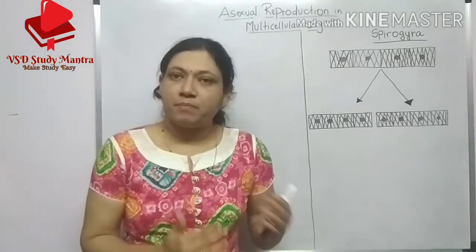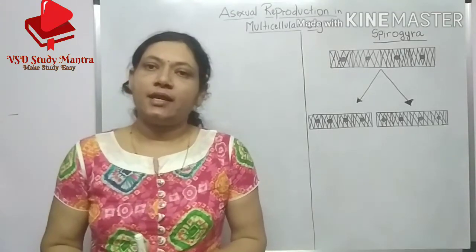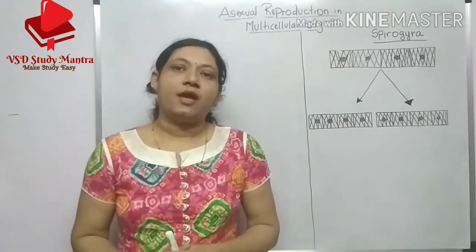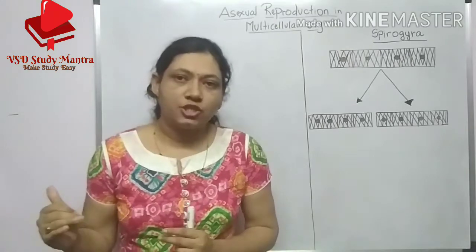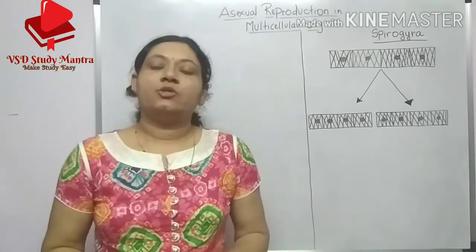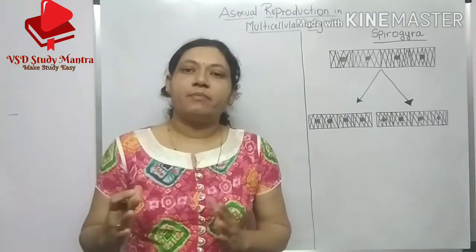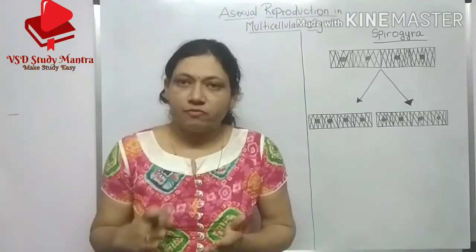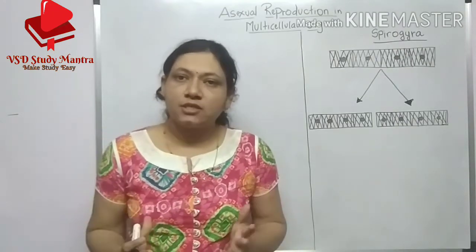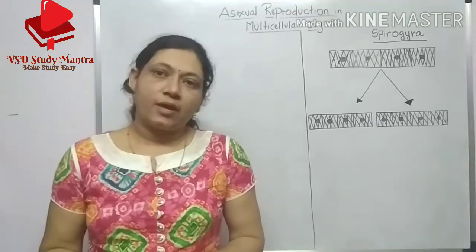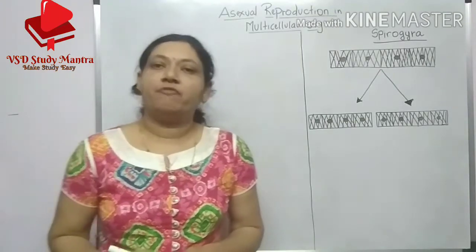We also covered multiple fission in amoeba and budding in yeast. You can see the previous videos for those topics. Now we will start with asexual reproduction in multicellular organisms. The first type is fragmentation. Today we will study the process of fragmentation and also the five causes of how fragmentation occurs.